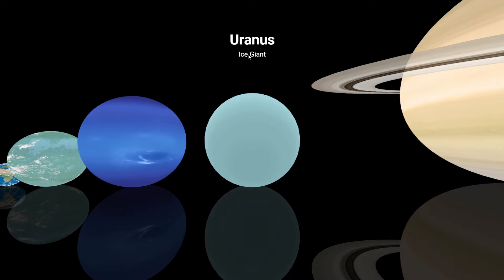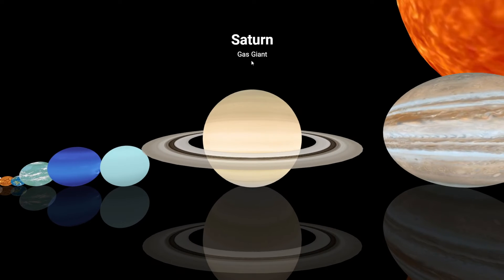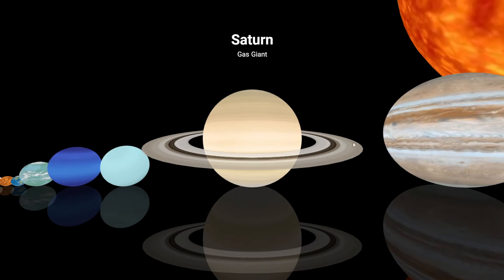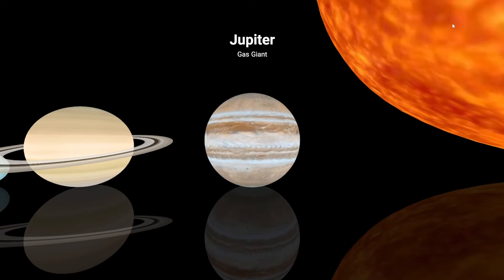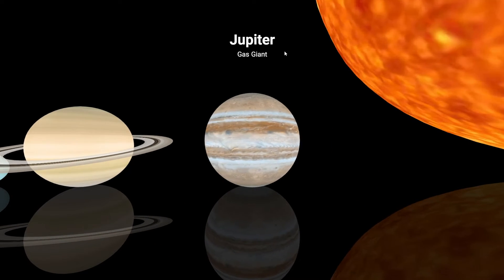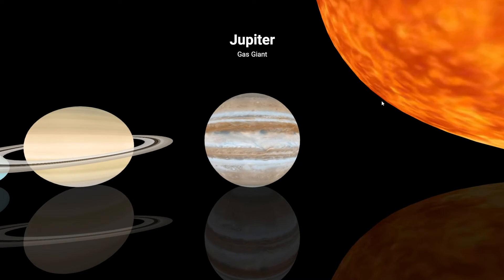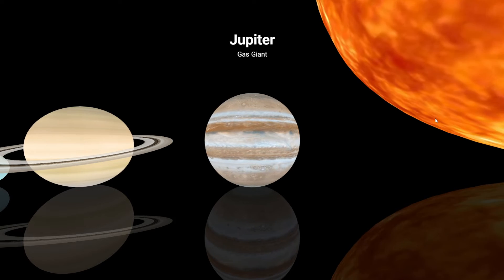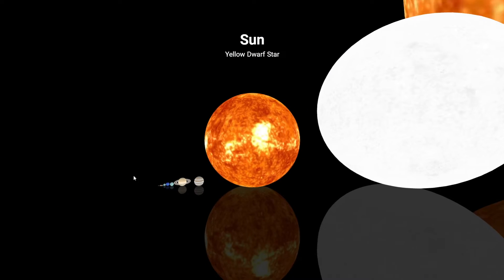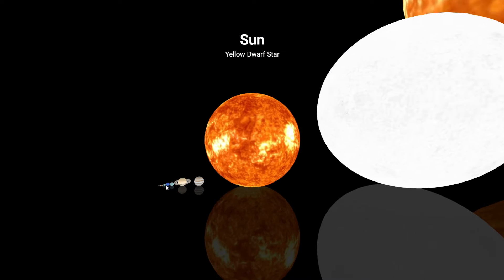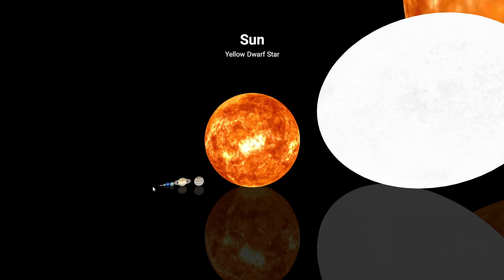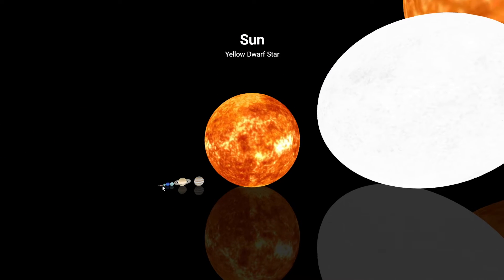Neptune, an ice giant. Uranus, also an ice giant. Saturn, a gas giant. Jupiter, also a gas giant. And Earth is all the way down there — tiny!